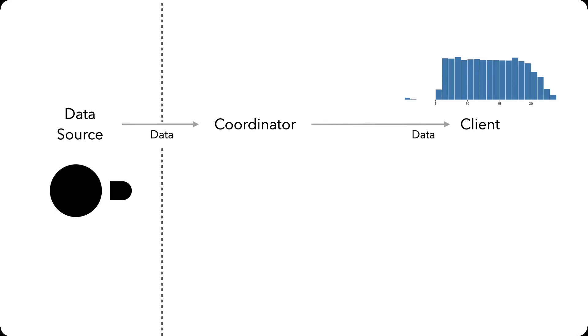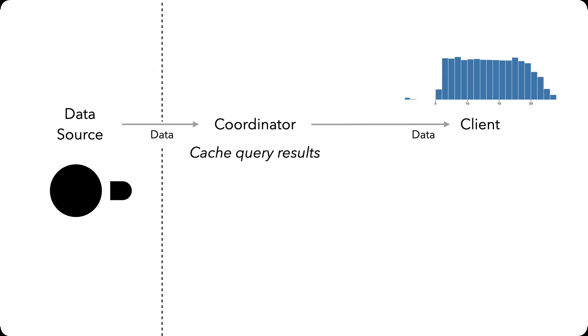To transport data, we use Apache Arrow, a binary format that enables efficient transfer with no subsequent parsing overhead. The coordinator caches query results for faster responses to repeated queries.